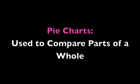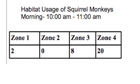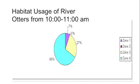Pie charts are another type of graph used to compare parts of a whole. Here we have a student's data table showing the habitat usage of squirrel monkeys in a one-hour period, showing which zone they were in during the hour. A pie graph is best for this data table because we can see how much time in one hour the animals spent in different parts of the habitat.